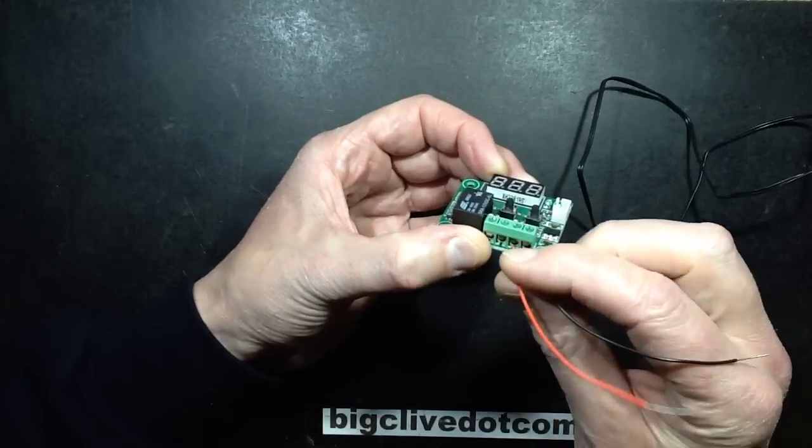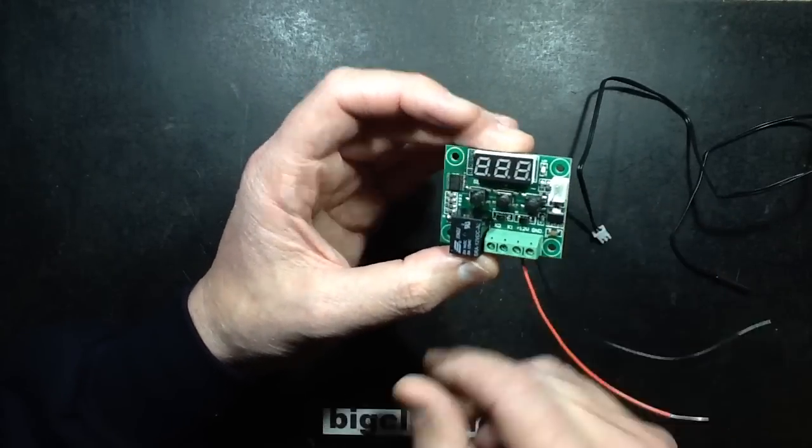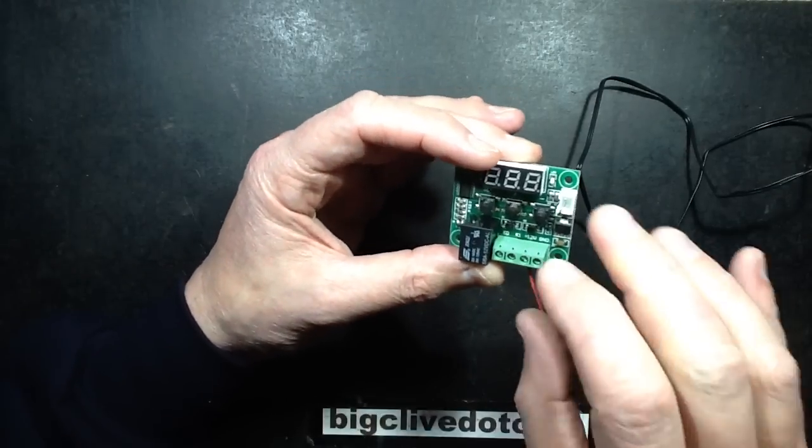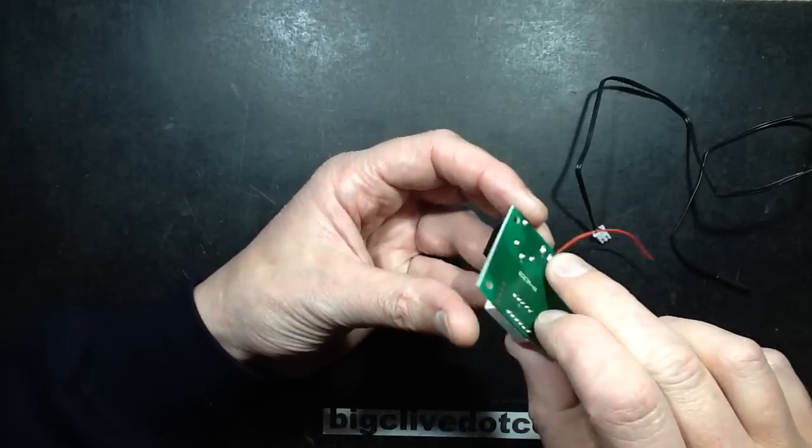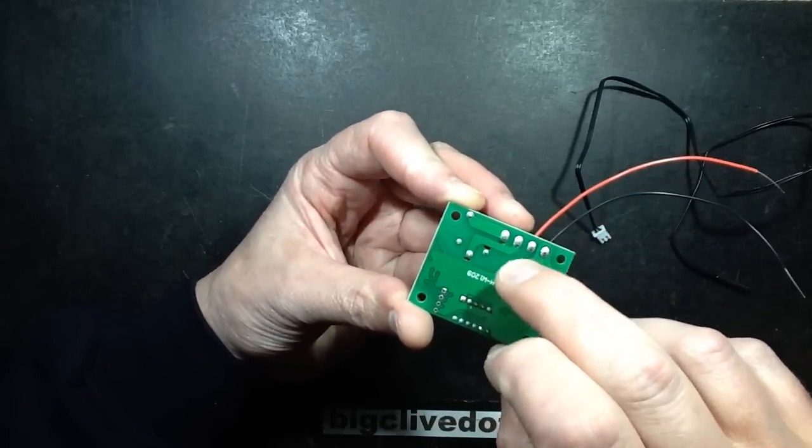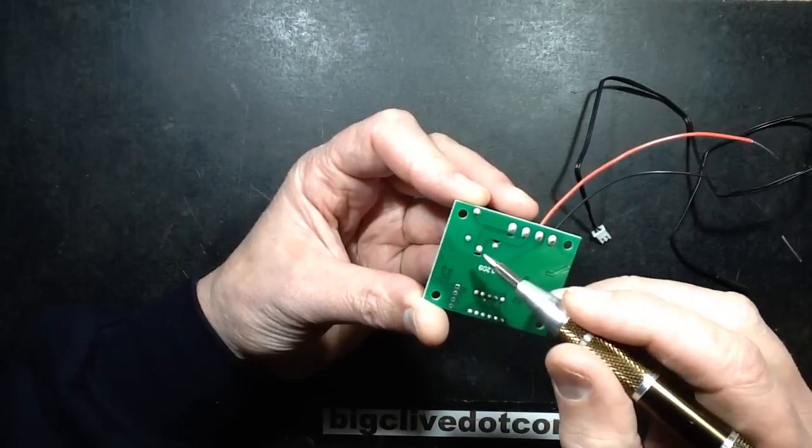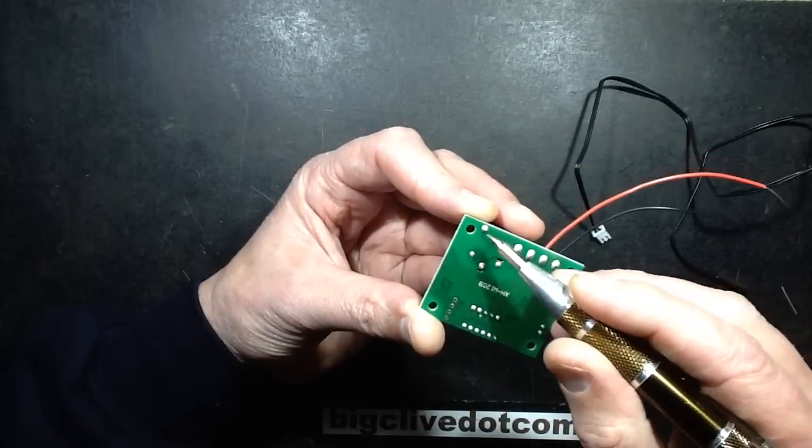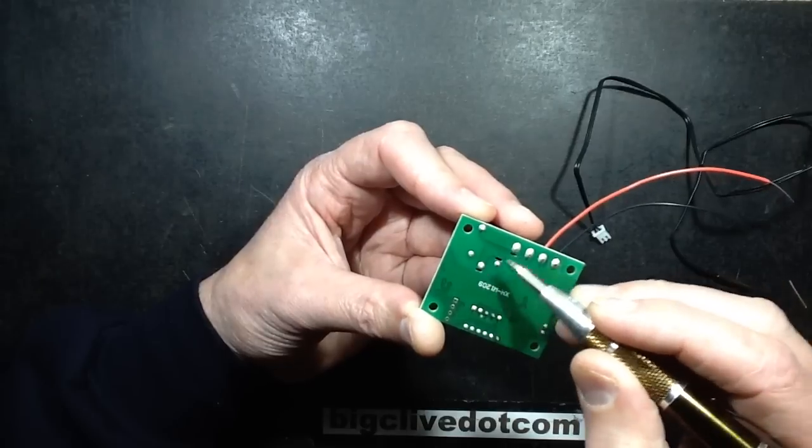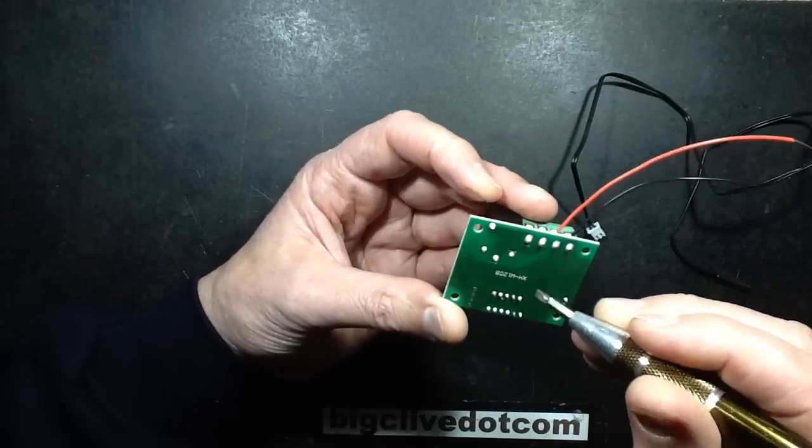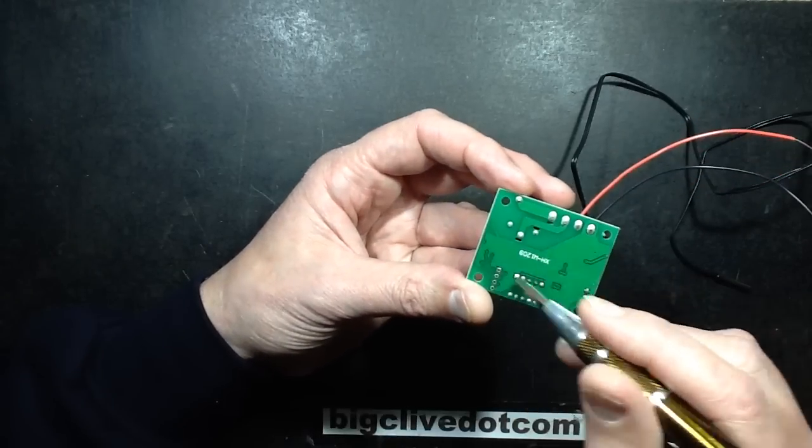Then there's two terminals marked K0 and K1, and they appear to be just volt-free contacts connected directly onto the back of this relay. And they have made an effort to put little clearance gaps to avoid tracking problems between whatever load you're switching and the low voltage circuitry.